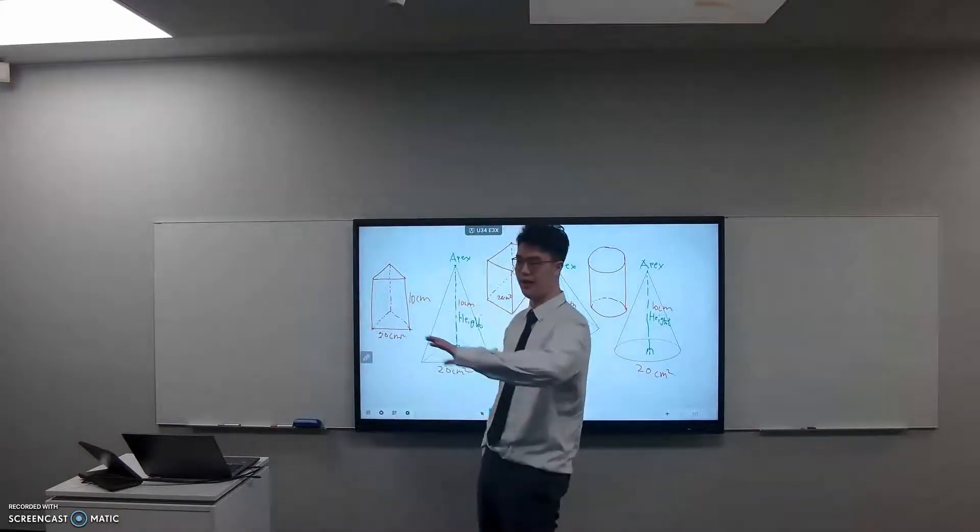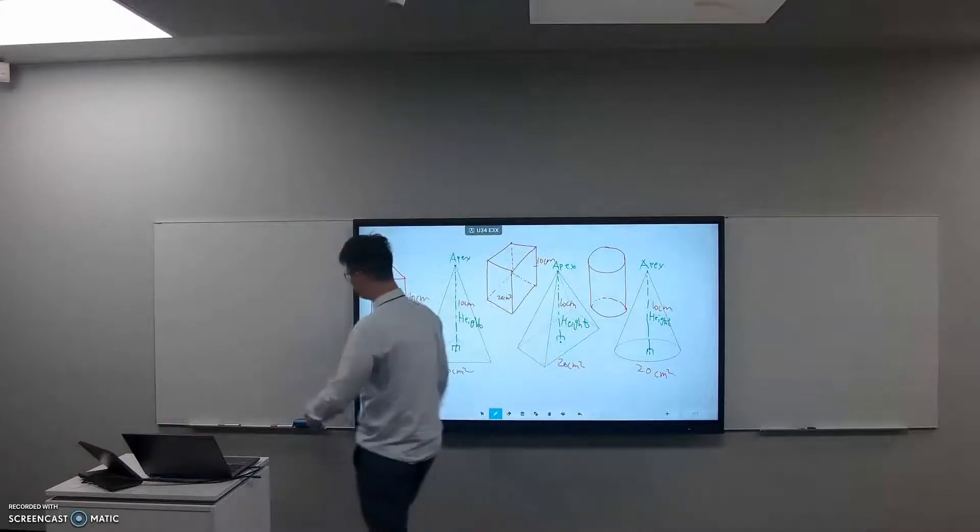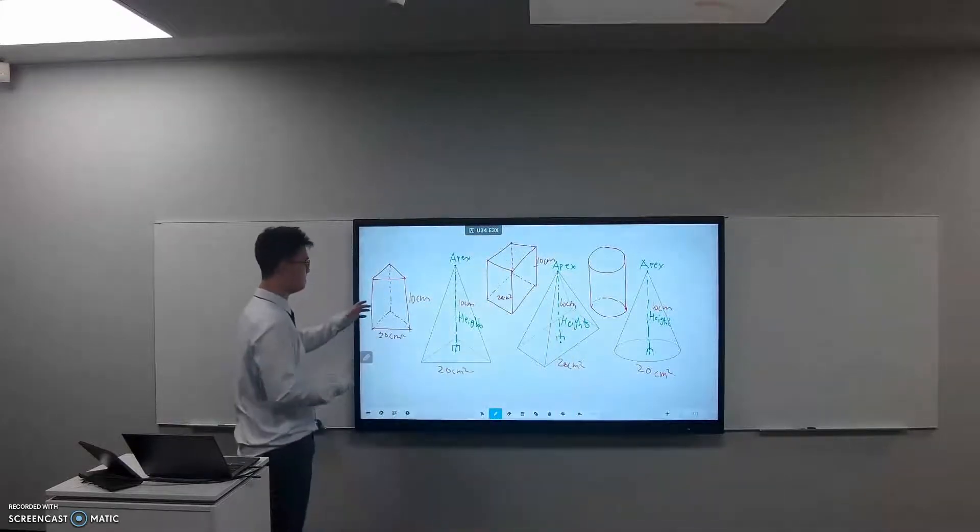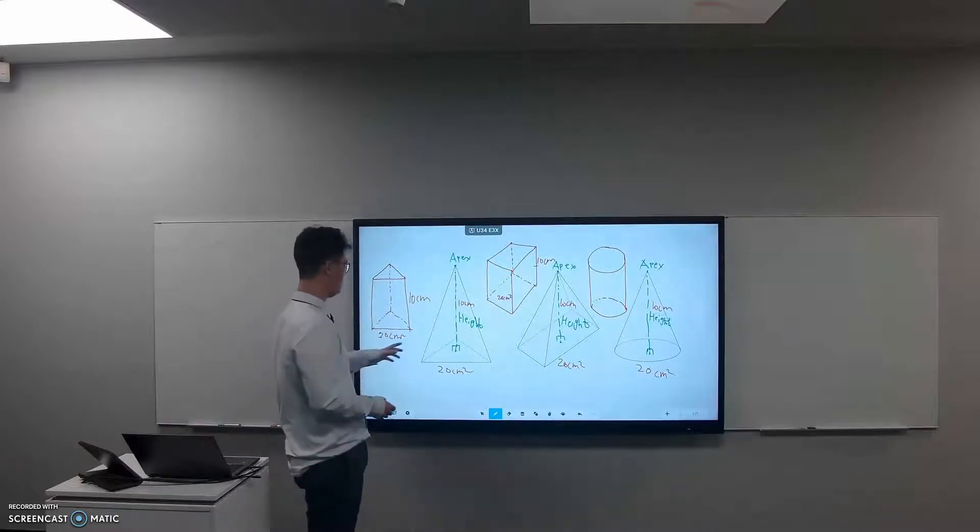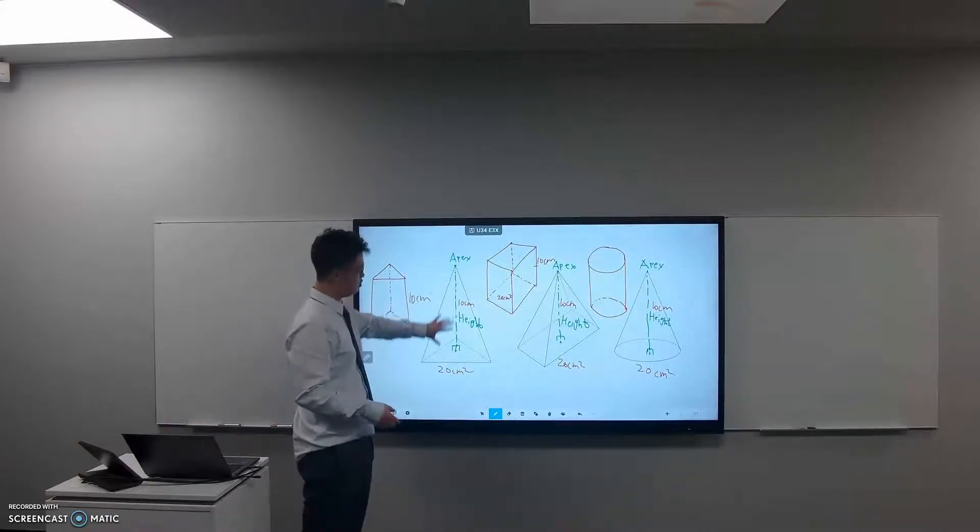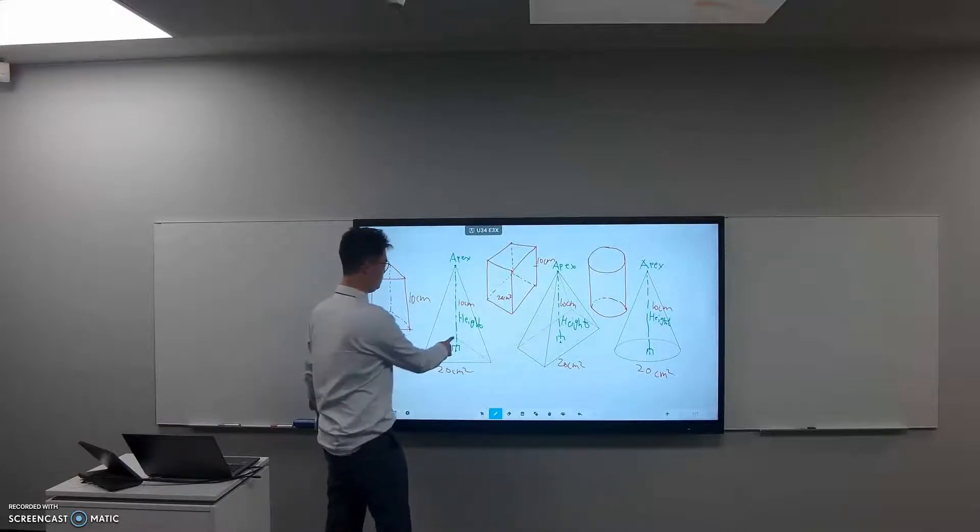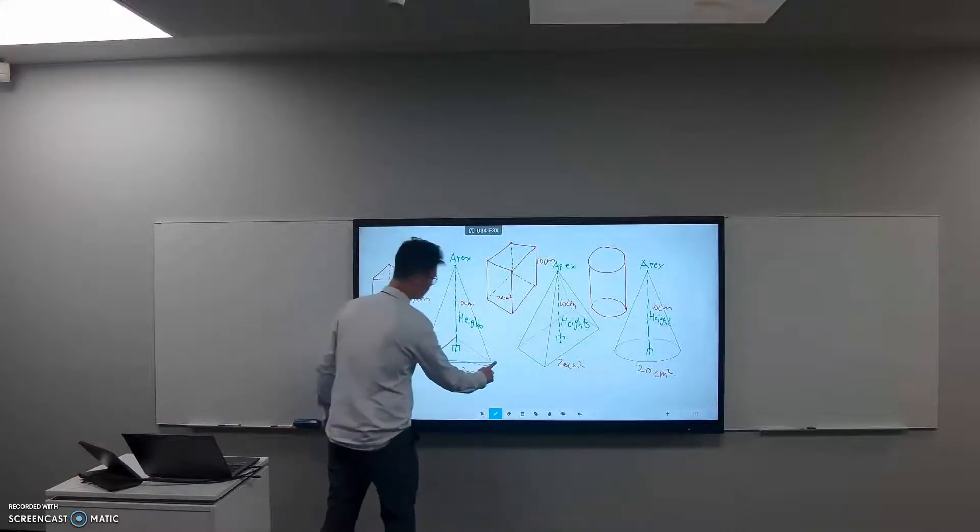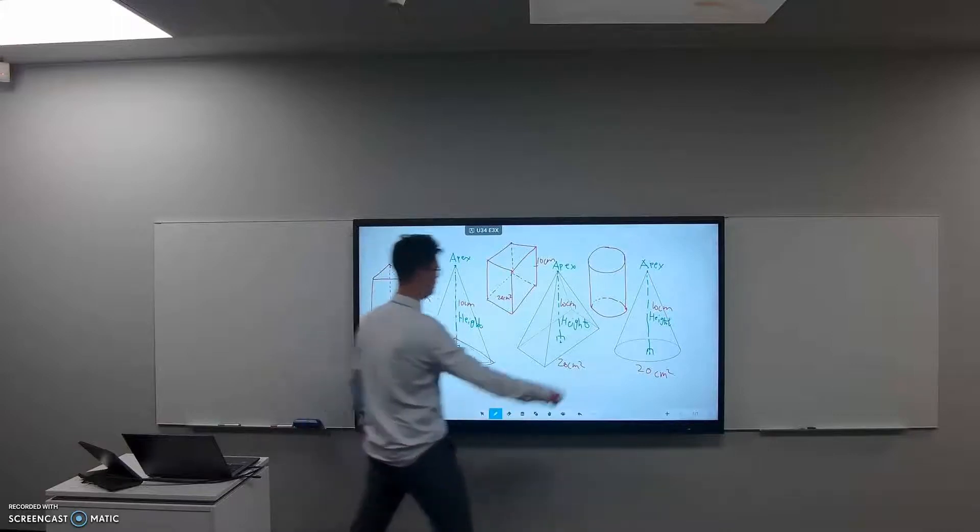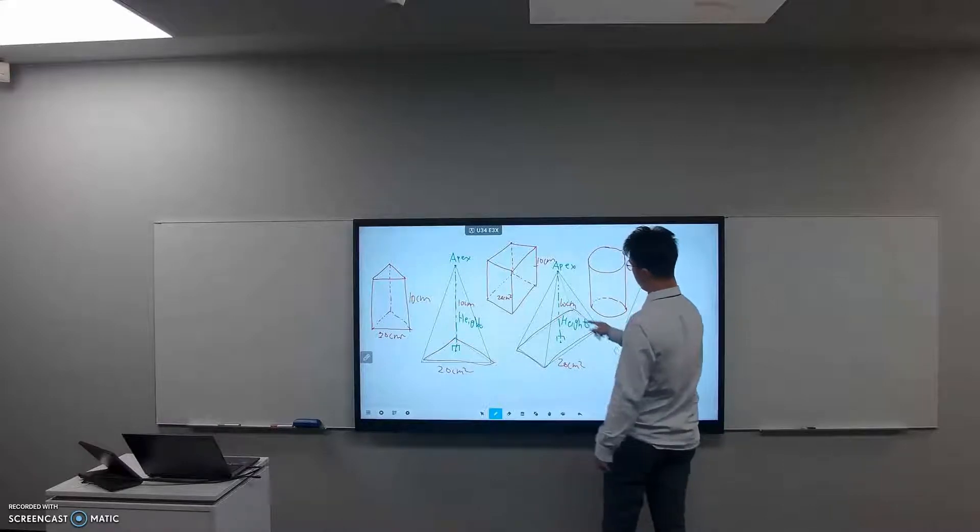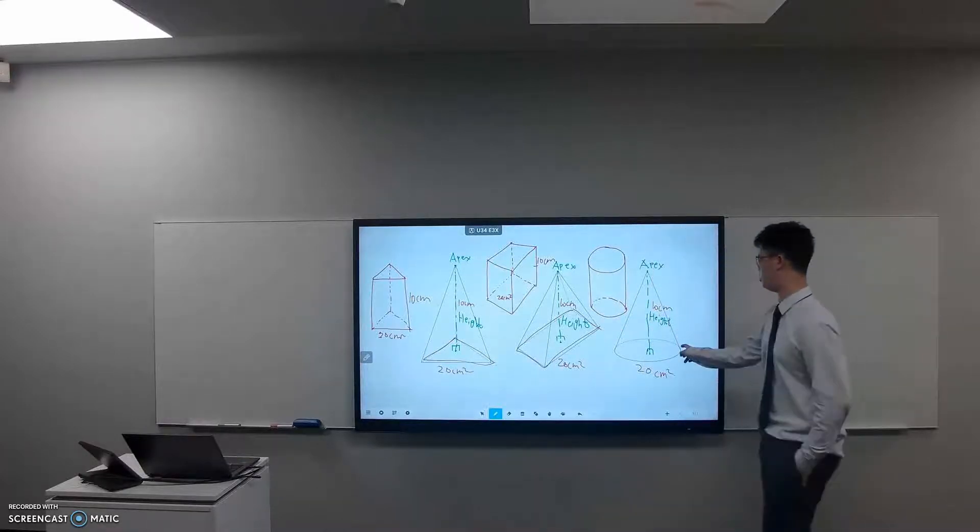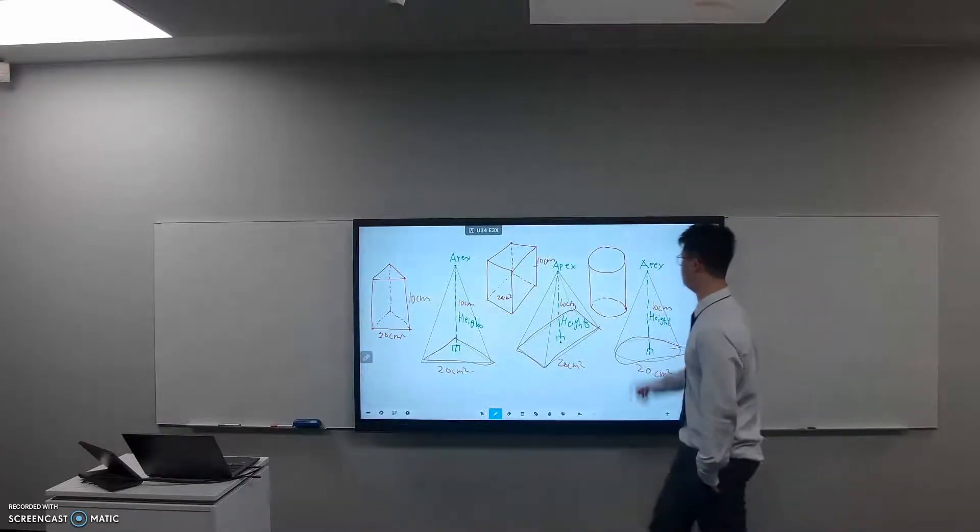Hello, so we're back. Look at this, I've just drawn all of this. This is a pyramid, this is a triangular pyramid because its base is a triangle. This is a rectangular pyramid because it has a rectangular base. This is just a cone because it has a circular base.